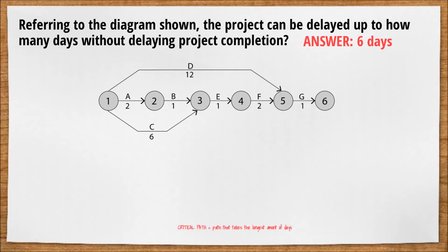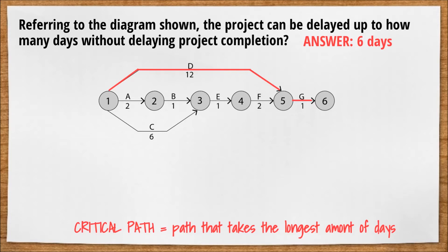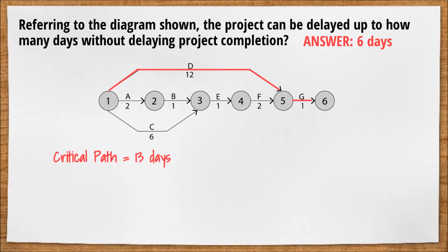The critical path in this diagram is 1, 5, 6, which is equal to 13 days. The other options are float paths.